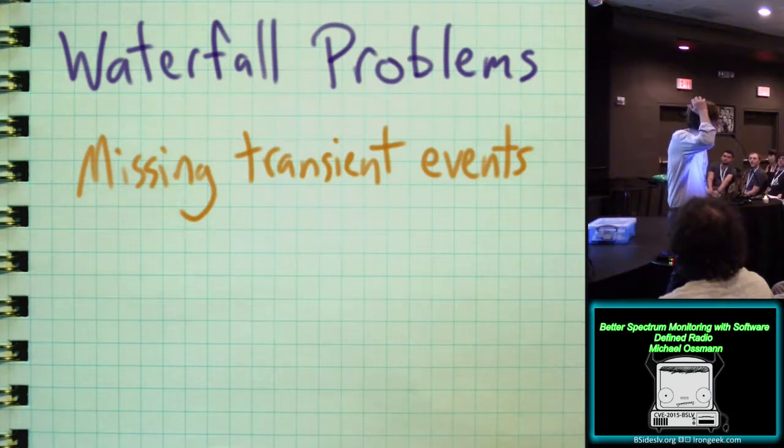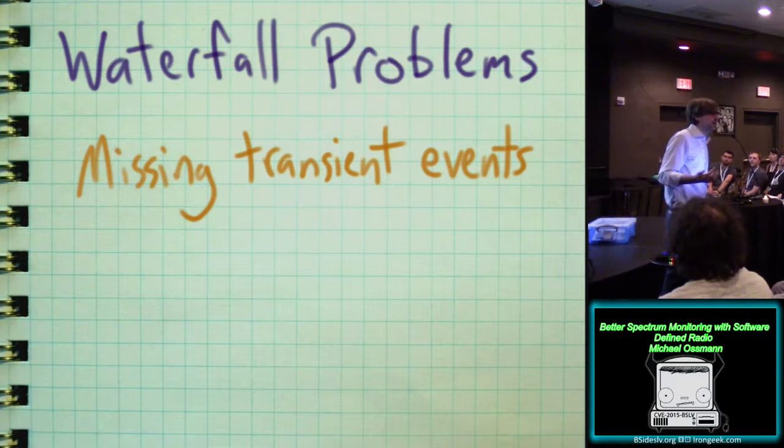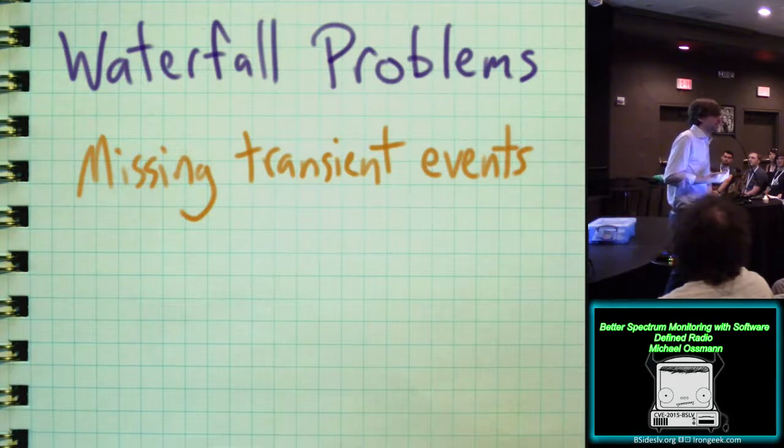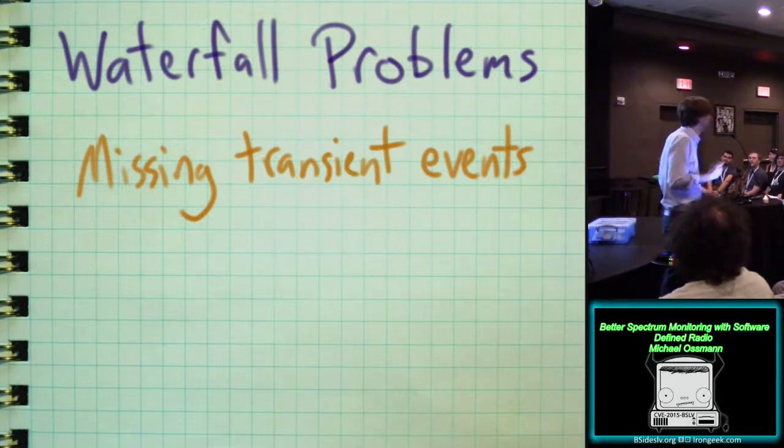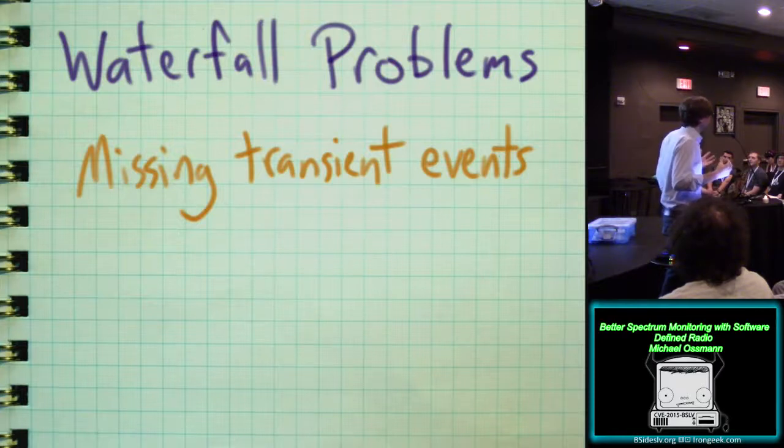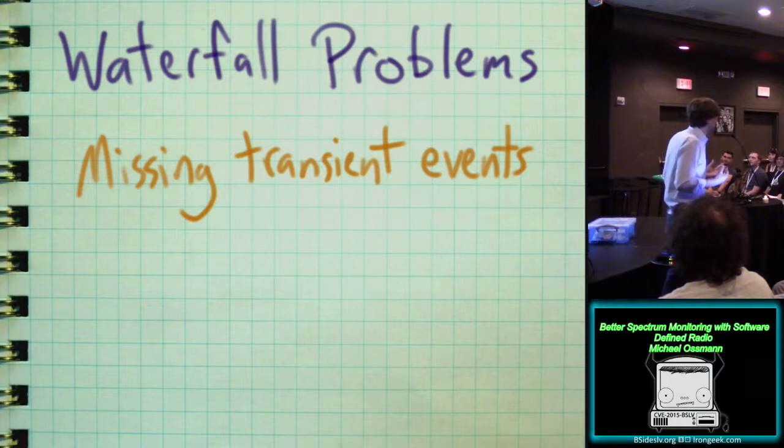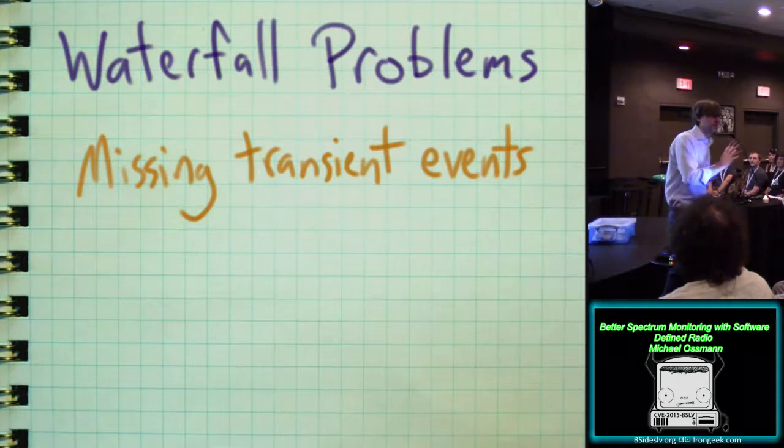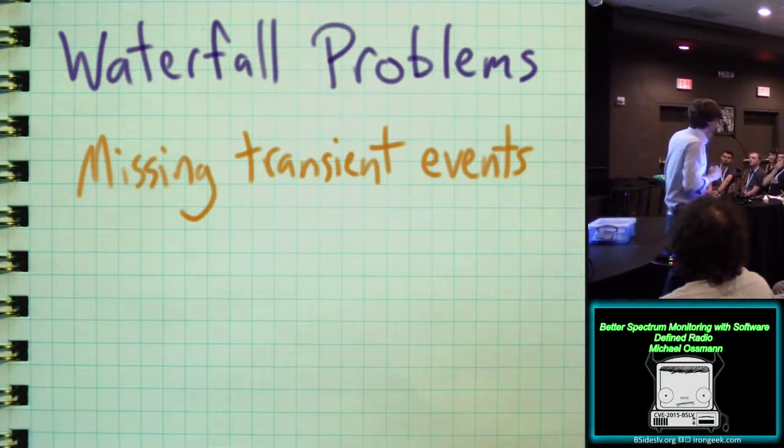You see a row, and then some time elapses. Maybe it's only a tiny fraction of a second, but then you see another row, and in between those two horizontal rows in your waterfall display, or those two time rows, you completely miss things that can happen. Now you might think, well, you'd only miss very short things. But guess what? Radio technology these days is full of very short things. Do you know how long a typical Bluetooth packet lasts? It lasts about 200 microseconds, maybe 500 microseconds. Microseconds, not milliseconds.